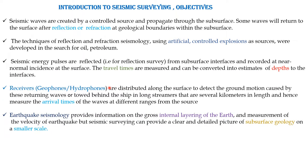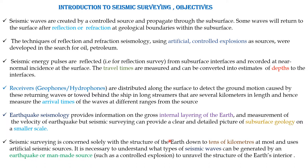There are receivers to receive the signal from reflection or refraction to detect the ground survey. For marine survey there are receivers that are several kilometers long. Comparing with earthquake seismology: earthquake seismology provides information on the gross internal layering of the earth and the measurement of the velocity of the earthquake. For seismic surveying, it can provide a clear and detailed picture of the subsurface geology on a small scale, and the depth that we can measure from seismic surveying is down to tens of kilometers using the artificial source method.